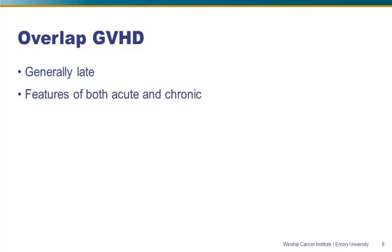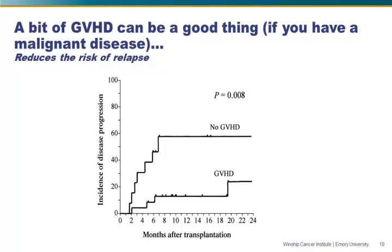A little bit of graft-versus-host disease is actually a good thing if you have a malignant disease, because it reduces the risk of relapse — patients who had GVHD had about half the risk of relapse compared to those with none. That said, GVHD is a continuum in severity. Studies consistently show that people who do best after transplant are not those who get no GVHD, but also not those who get a lot. It's those fortunate enough to get just a little bit who are most likely to survive and not have relapse. Striking that balance is the hard part.